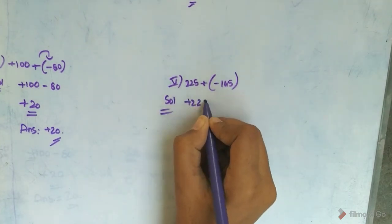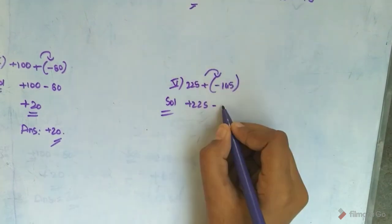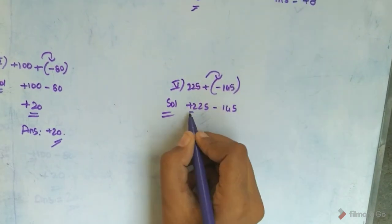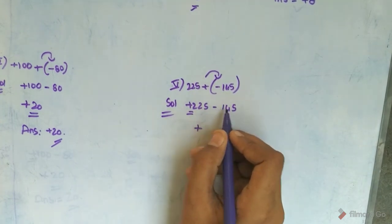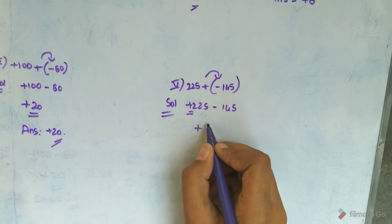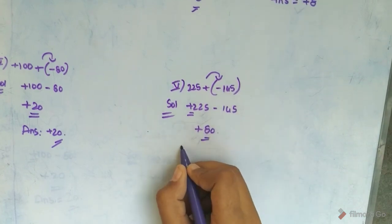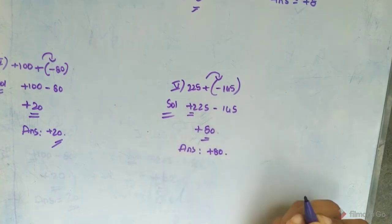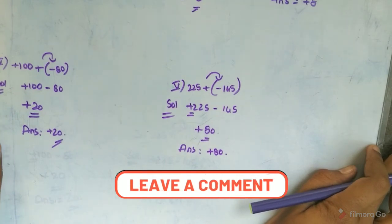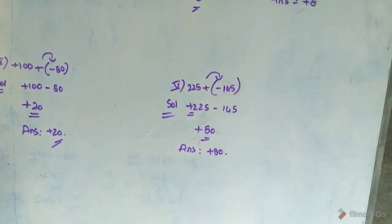The fifth one is: plus 225 plus of minus 145. The largest number's symbol is plus, and 225 minus 145 is equal to 80. So the answer is plus 80. Okay friends, this is the end of this video. If you have any doubts, please share them in the comment section and I will try to give answers to your questions.